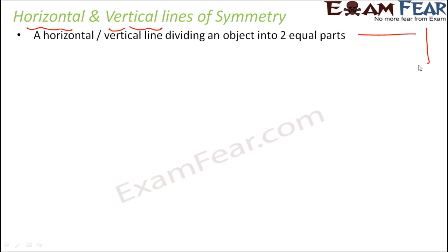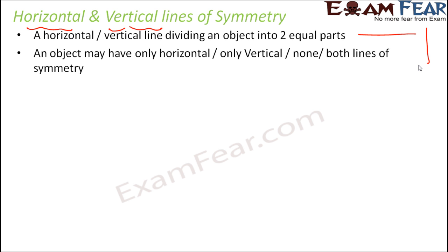So let's take examples so that it becomes clear to you. Now any object can have only horizontal line of symmetry or only vertical line or both or none. Okay, let's take this example.